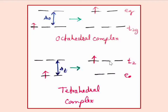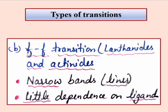F-F transitions occur in lanthanides and actinides. Generally, F-F transitions appear as sharp lines rather than broad bands, and these transitions depend on the ligands. The F-orbital electrons can transfer between F-orbital energy levels.